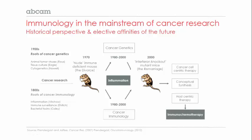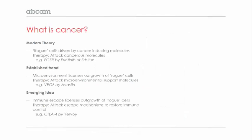Putting those two together is where immunochemotherapy comes in — the idea of treating the host immune system plus the existing treatments of chemotherapy, traditional radiotherapy, and surgery. Our modern theory is that the rogue cells of cancer are created by cancer-inducing molecules, and our modern therapies attack those molecules — for example, attacking the EGF receptor with Herceptin. There is an established trend in attacking the microenvironment, demonstrated most dramatically clinically by the success of attacking support molecules related to angiogenesis, the attraction of a blood supply by a tumor, using anti-VEGF antibodies such as Avastin.